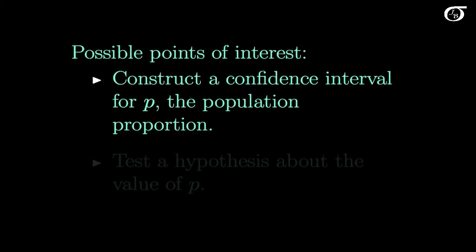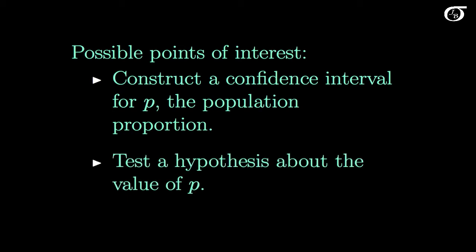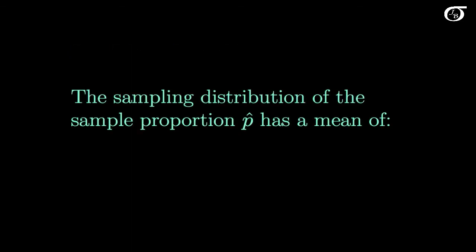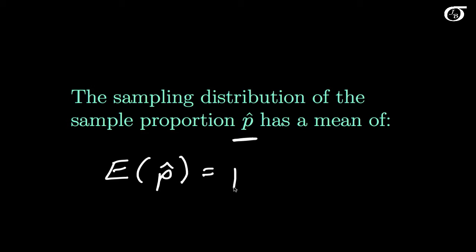Our possible points of interest here are to construct a confidence interval for p, the population proportion, and possibly test a hypothesis about the value of p. To do any of that statistical inference, we need to know something about the sampling distribution of our statistic p-hat. One thing we know is that the expectation of p-hat is just p.